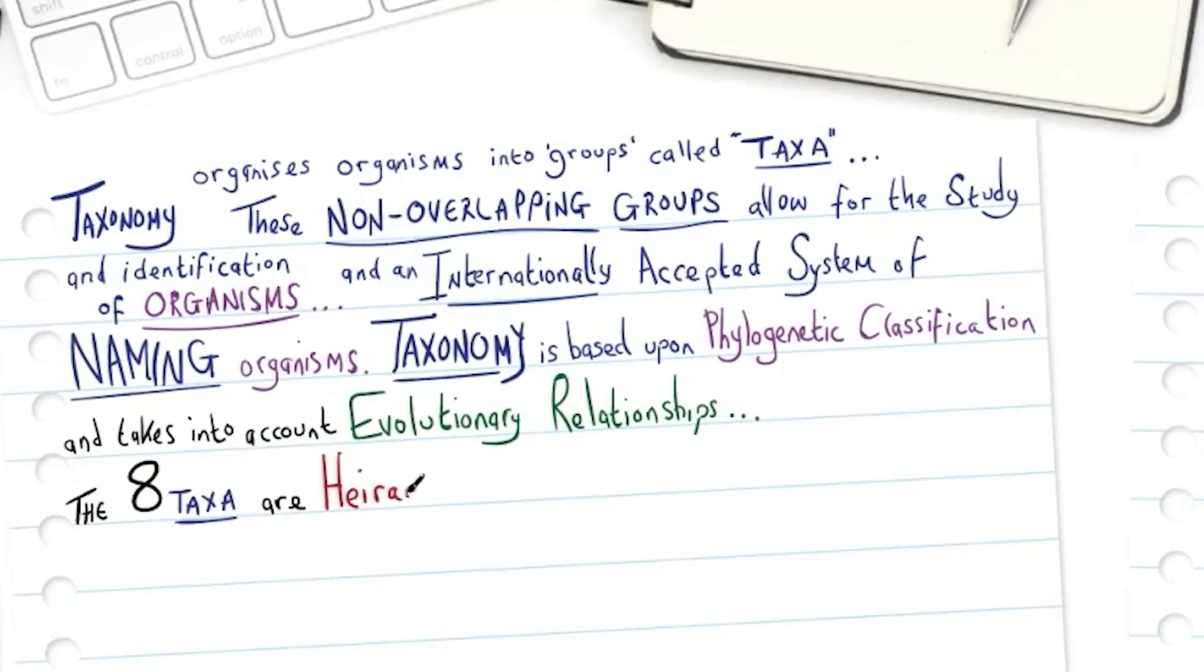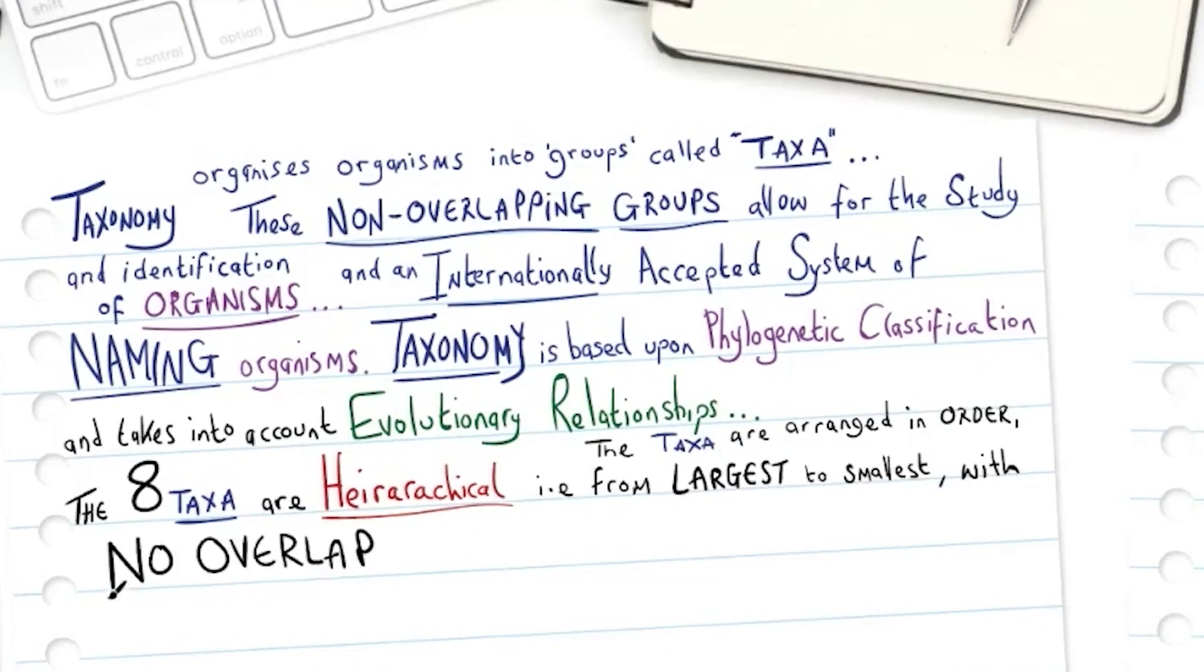The eight taxa are hierarchical. The taxa are arranged in order from the largest to the smallest with no overlap. Therefore organisms can only belong to one taxa at each level in the hierarchy.